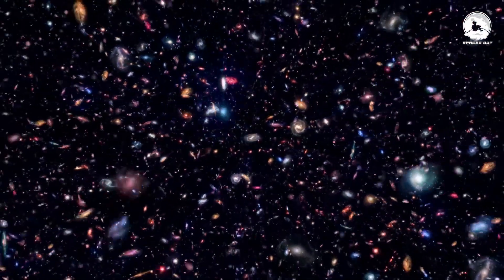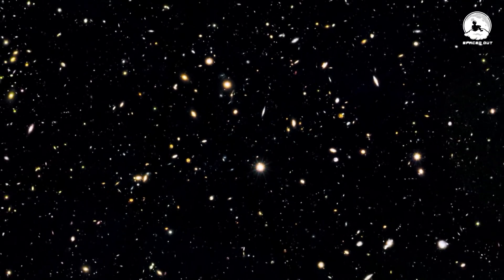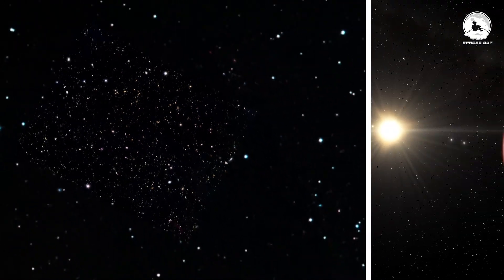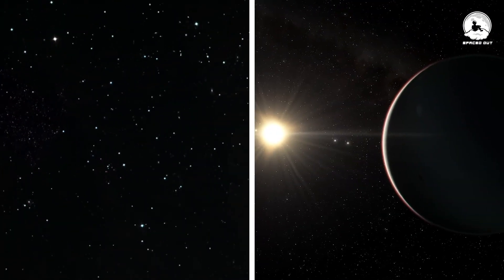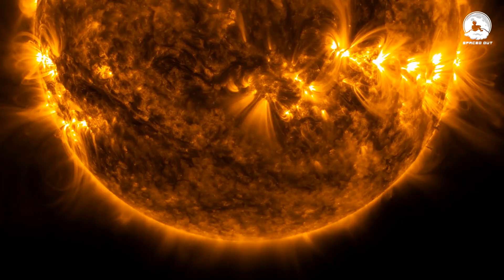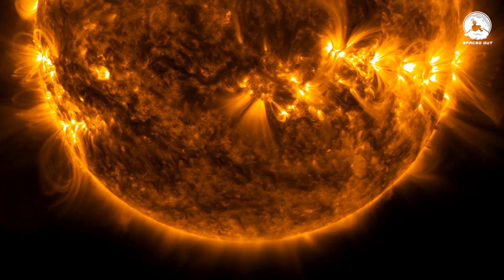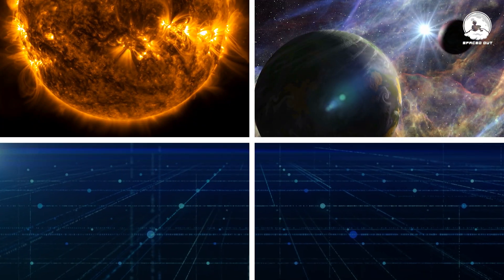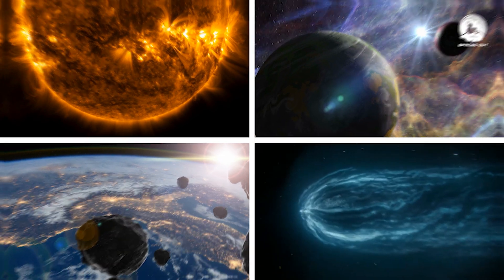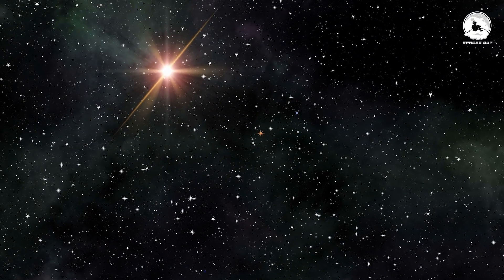We know that the universe is massive, and most of it is large, empty space with astronomical distances between nearby objects. When we turn our gaze away from the sun, planets, asteroids, and comets, we find ourselves facing this deep space.